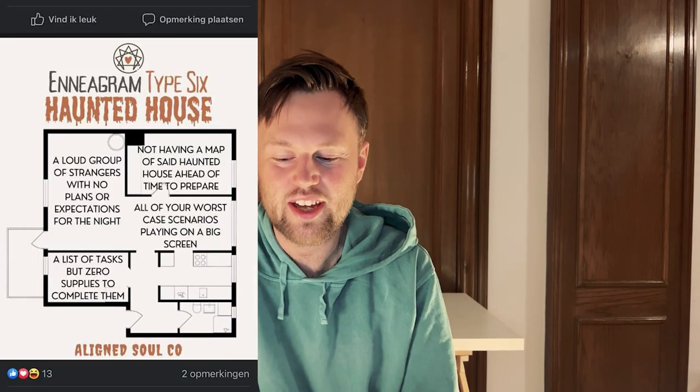The Enneagram type 6 haunted house: a loud group of strangers with no plans or expectations for the night, and not having a map of the haunted house ahead of time to prepare. All of your worst-case scenarios playing on a big screen — you could have seen that coming, right? You probably spent a lot of time worrying about it, and here it is as a haunted house. And a list of tasks but zero supplies to complete them. The Enneagram 6 loyalists like to prepare ahead, tend to be a bit anxious about what could go wrong, and like to solve problems before they come up.